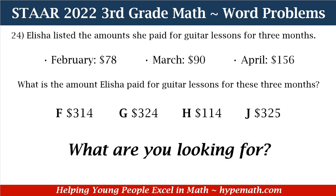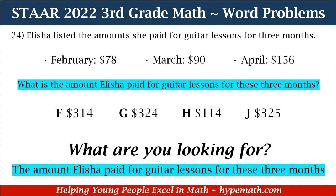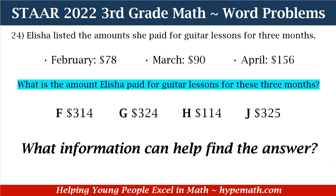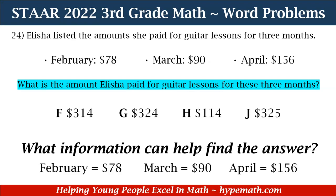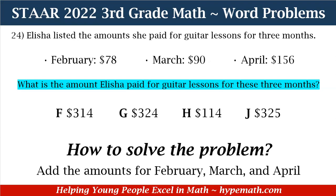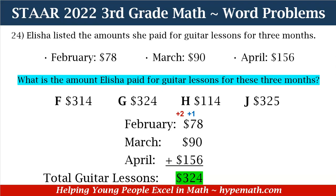In order to answer this question, the first thing we're going to do is ask ourselves: what are we looking for? We are looking for the amount that Alicia paid for guitar lessons for the three months. The next question is: what information can help us find the answer? The information we need is the amount she paid for each month — February $78, March $90, and April $156. We are going to add the amounts because it says what is the amount for February, March, and April. So let's add our numbers together.